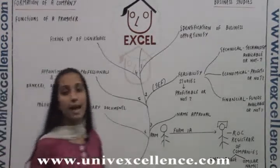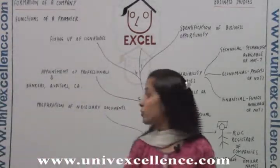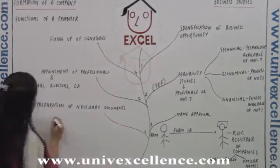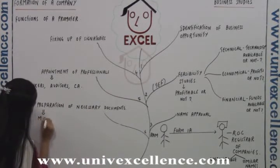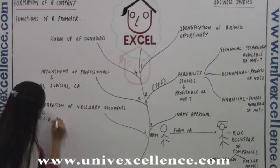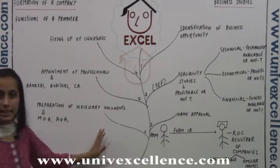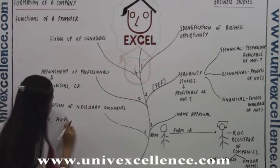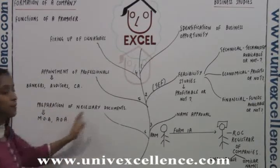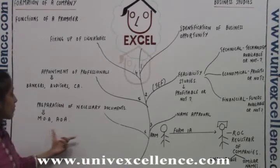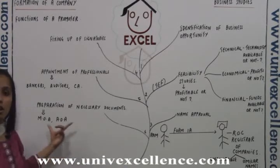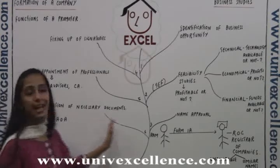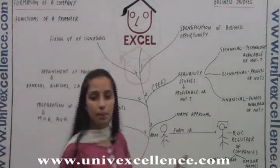There are various documents that have to be prepared: documents like MOA (Memorandum of Association) and AOA (Articles of Association). We will discuss them all in detail. These have to be prepared by the promoters. So, their next function is to prepare these documents before the company is formed. This is the sixth and last function of the promoter.